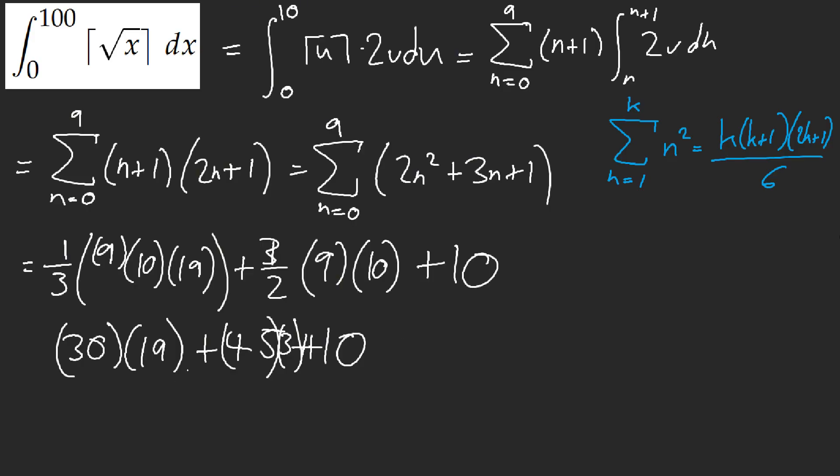Okay, so 30, let's see, 19 times 3. What is 19 times 3? Who the heck knows this? 27, 3, 57, 570 plus 45 times 3. It's like 90, plus 45, that's like what, 135 plus 10?